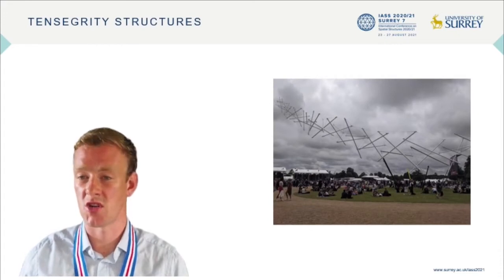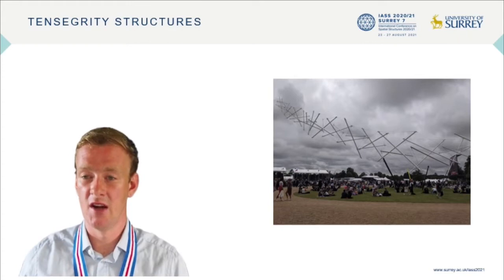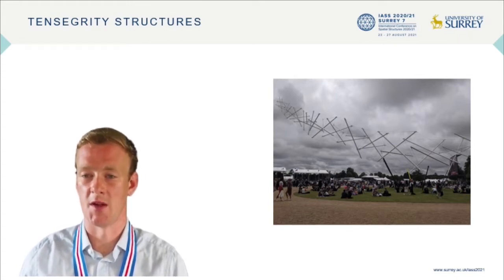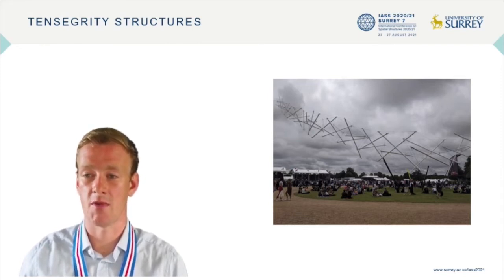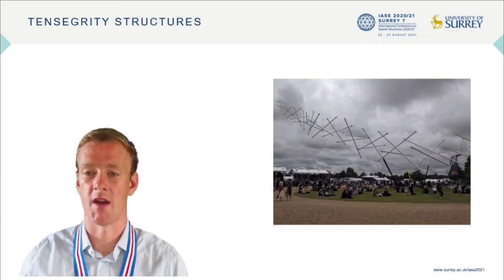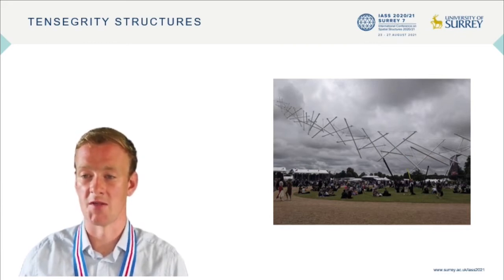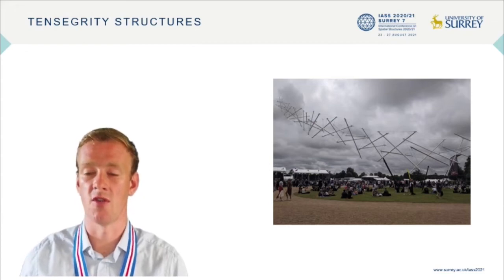Why is this important for pin-jointed trusses with extensible members? Either such trusses contain no mechanisms and are rigid, or they contain mechanisms which must be stabilised. These mechanisms can only be stabilised via a set of forces such as a pre-stress within the structure. A good example of such structures are tensegrity structures, which contain mechanisms stabilised by a pre-stressing of the framework. Such pre-stress stability is the focus of this research.